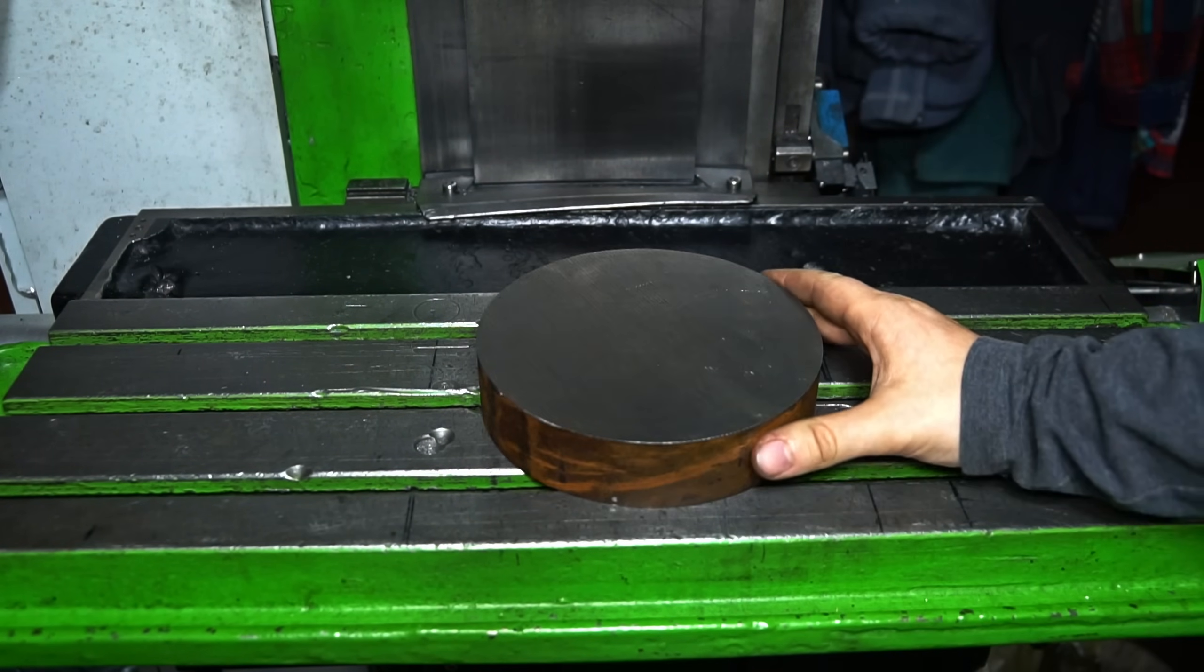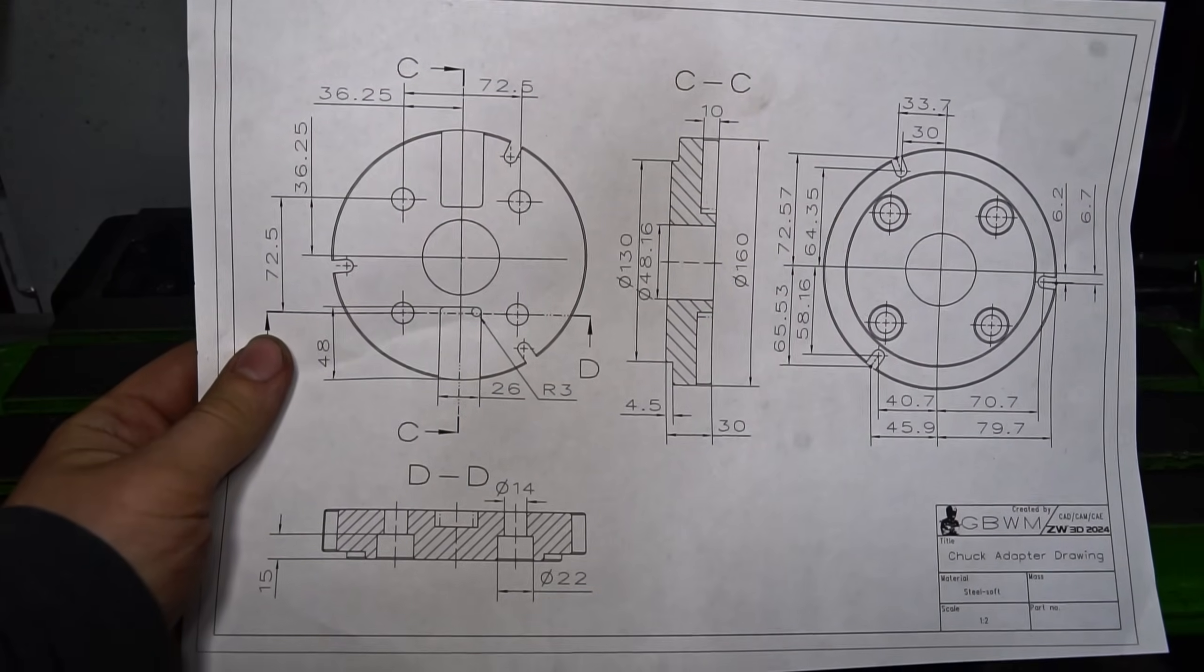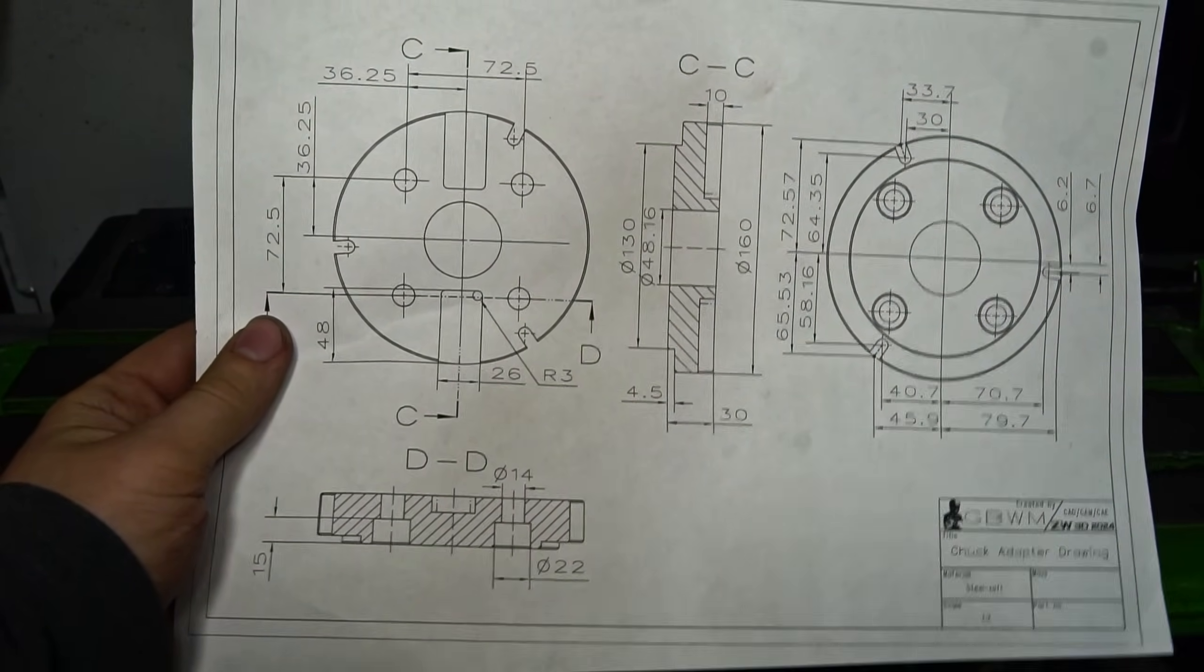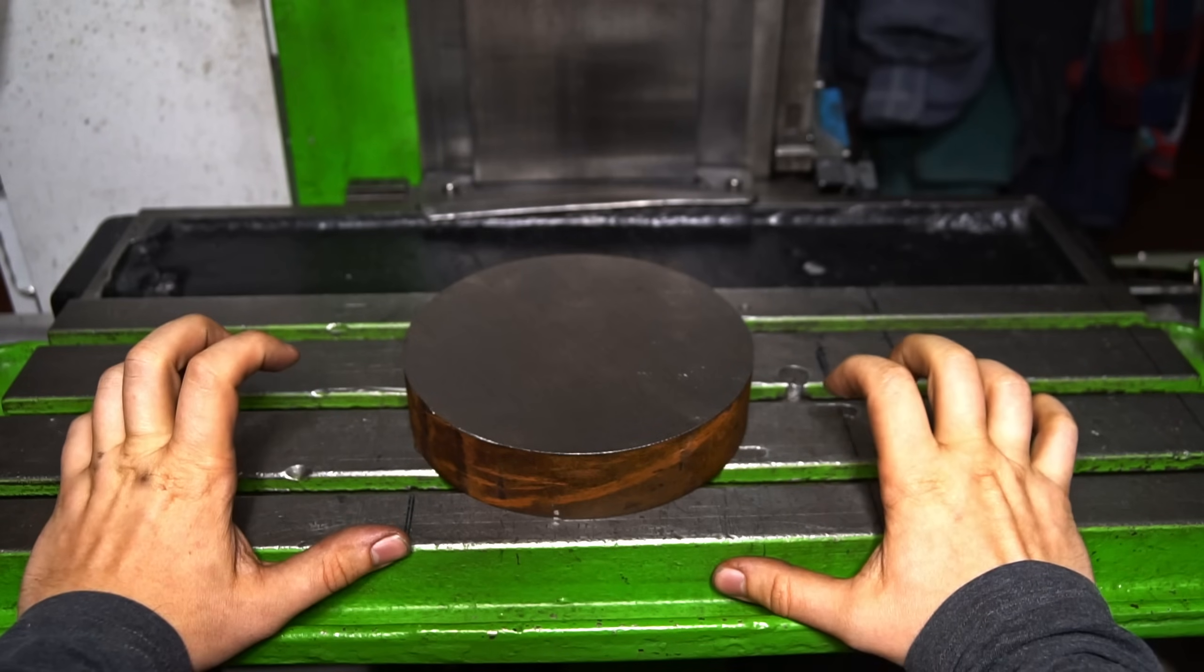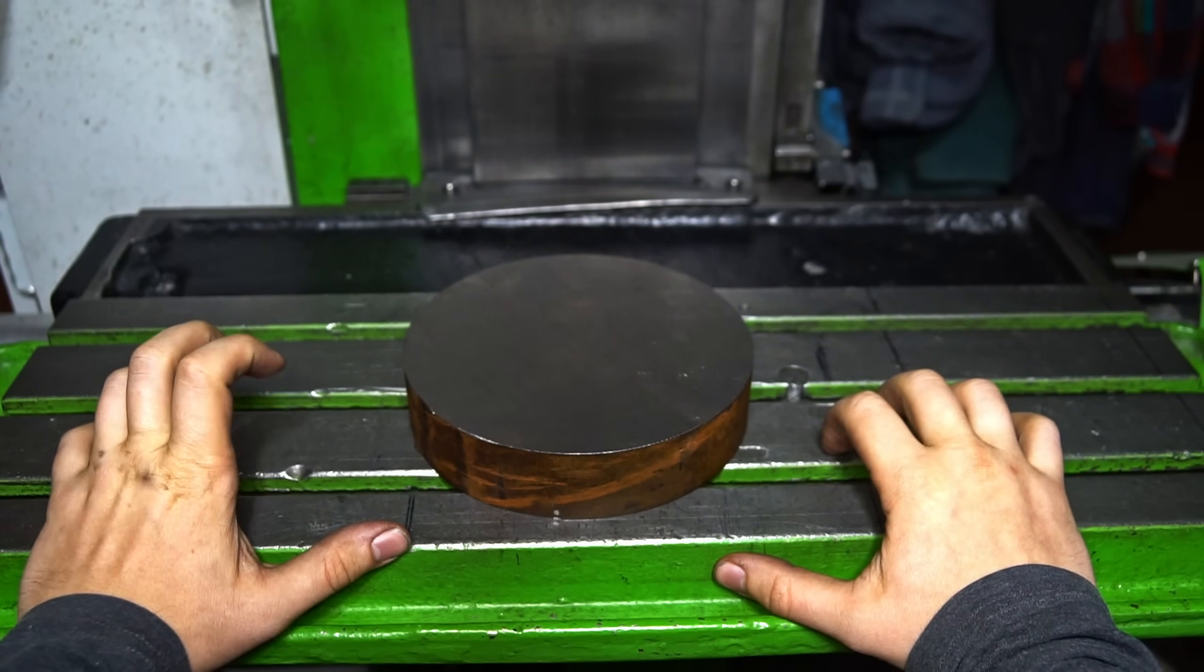This is a piece of C45 steel and this is the drawing of the part I would like to make. But first of all, I need a way to grip it to the table.